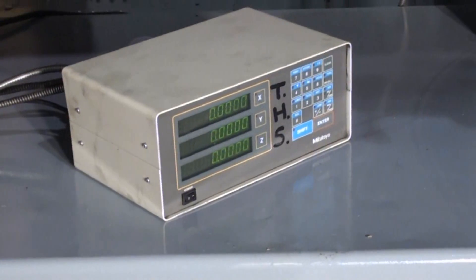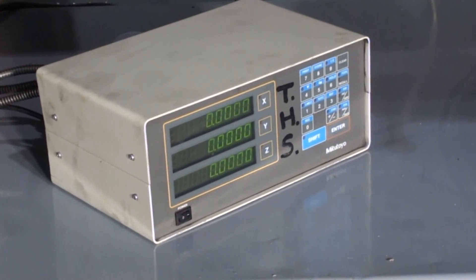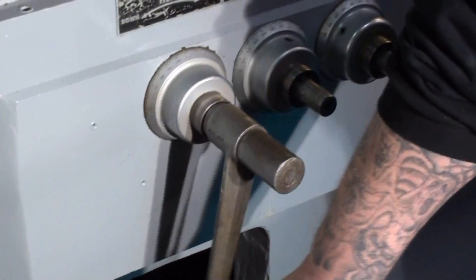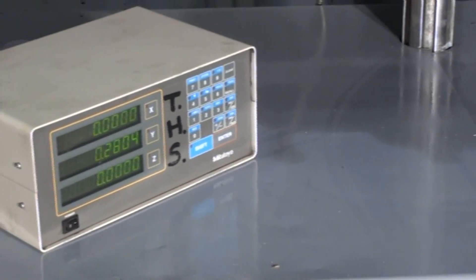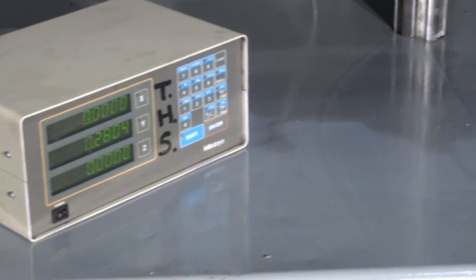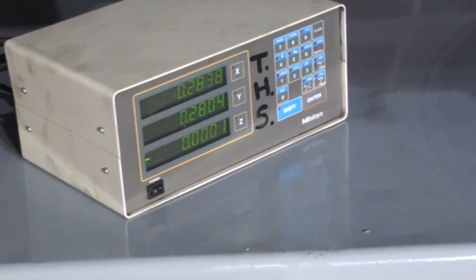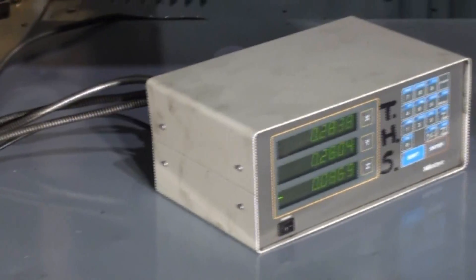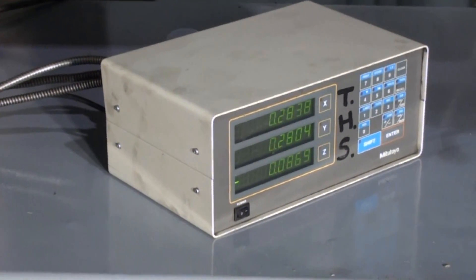I just want to take a second and show this Mitutoyo three-axis digital readout system. I have it zeroed out right now and we're going to go ahead and show it work in the Y-axis vertical scale. We're doing this manually with the hand crank. Go ahead to the X-axis right there, and this would be the table, and then the Z-axis, the saddle. Go ahead and reverse that. So that's the digital readout system, very nice three-axis readout system for the machine.